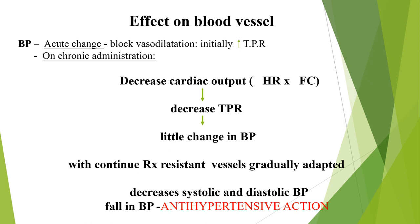Effect of beta blockers on blood pressure: in acute phase, beta blockers block vasodilation at the periphery, initially increasing total peripheral resistance. On chronic administration, cardiac output is reduced and peripheral resistance decreases. With continued use, resistance vessels gradually adapt, decreasing both systolic and diastolic blood pressure — the antihypertensive effect.